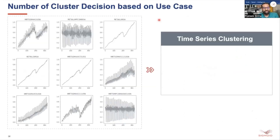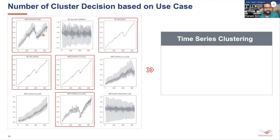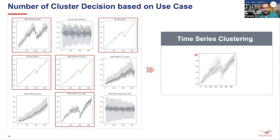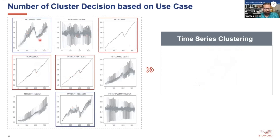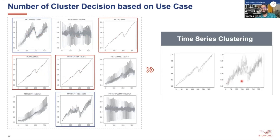Sometimes based on the use case we may have to decide the number of clusters differently. For example, suppose these trends refer to some kind of activity of people. We might cluster all similar-looking ones together into one cluster. But if the blue-boxed trends — which have more fluctuations compared to the red ones — refer to a different activity, then we should create two separate clusters for them.